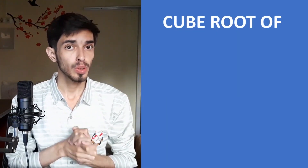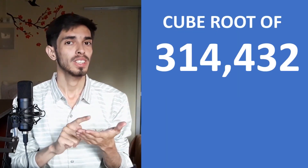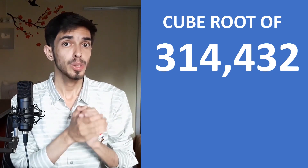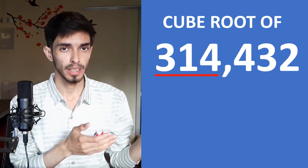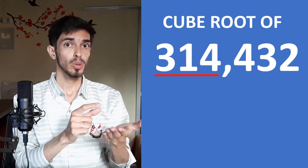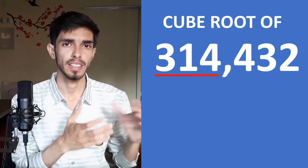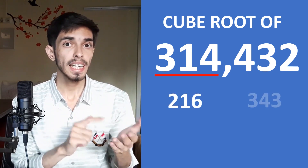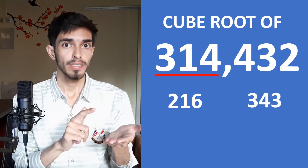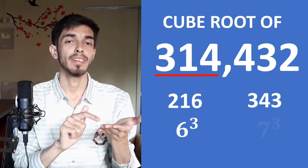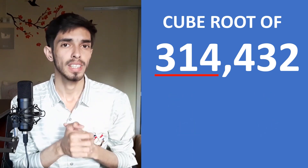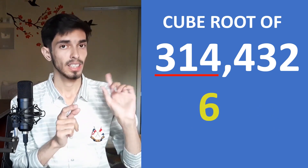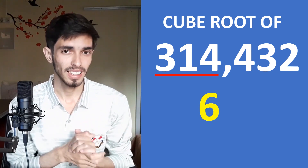Now let's find the cube root of 314,432. Step 1 is to look at the thousands part: that is 314. It lies between 216 and 343, which are 6³ and 7³. So the first digit of our answer is in the 60s — the first digit is 6. We have so easily got the first part of our answer.